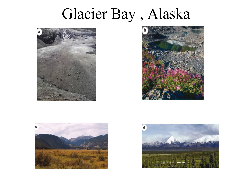An example is Glacier Bay in Alaska, where a glacier retreated, exposing new land and allowing plants to grow. Pioneer species established with very little soil, and over time the soil levels increased. It became more grassland as soil quality improved due to better biotic and abiotic conditions — plants using nutrients and introducing new ones. Eventually pioneer species give way to climax communities of woodland.